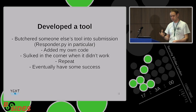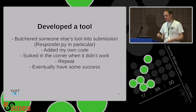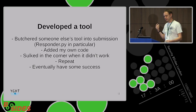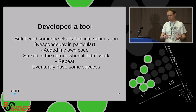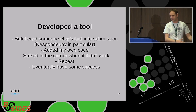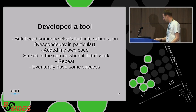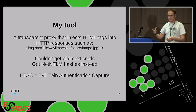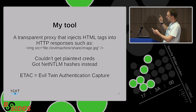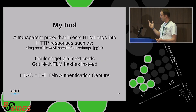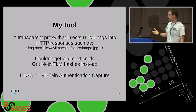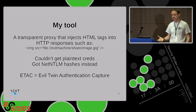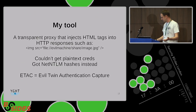I just started writing my tool. I had an idea of what I wanted to do. I took somebody else's code, frankly, because it was easy and it worked, and then I added stuff to it. I went through this process over quite a long time — building a bit, it worked a bit, then I'd come up with a bug, tear my hair out, leave it, and come back later. This is what it fundamentally does: it's a transparent proxy sat on top of the SMB capture stack from Responder. The important bit is it injects an image tag in HTML. Because I knew I couldn't get plaintext credentials, I was going to get the next best thing — Net-NTLM hashes — so I could do cracking against those. I called it ETAC: Evil Twin Authentication Capture.